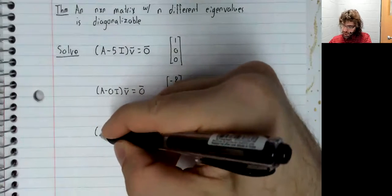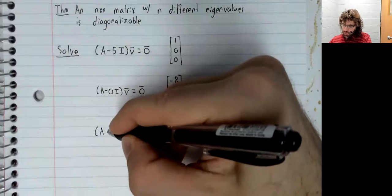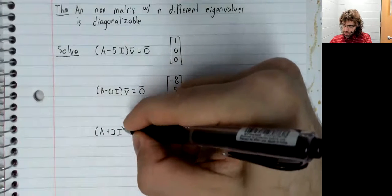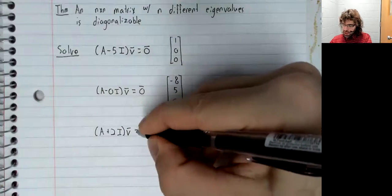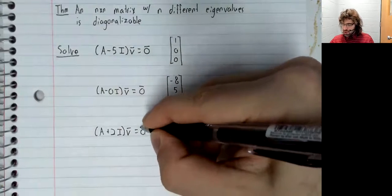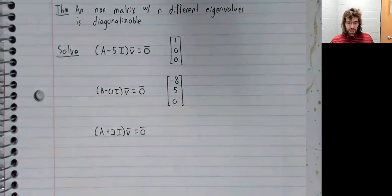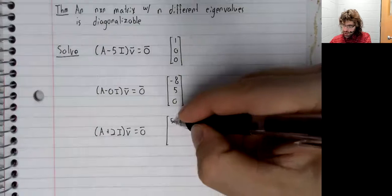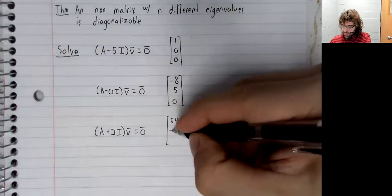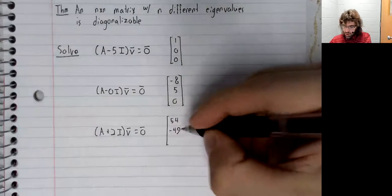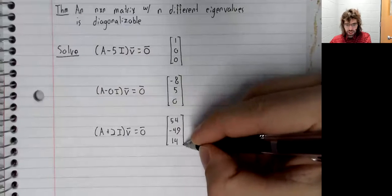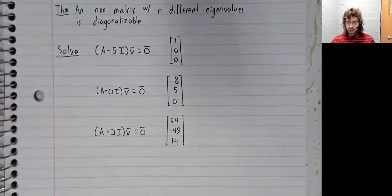Now we've got negative two. So A plus two I times V equals zero. Again, infinitely many solutions. Here's one of them.